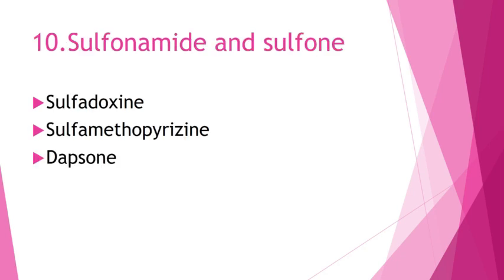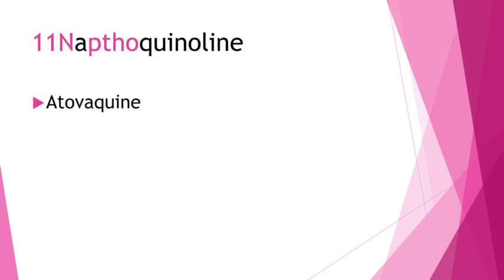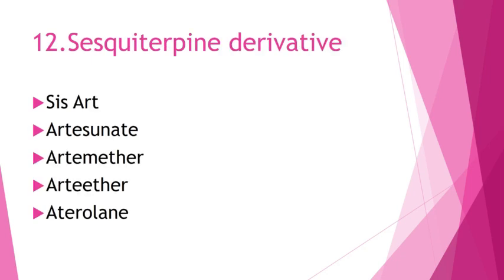Tenth is sulfonamide and sulfone — in this class we have sulfadoxine, sulfamethoxypyridazine, and dapsone, three drugs. Eleventh is naphthoridine, with the drug atovaquone. Twelfth is sesquiterpene derivatives — mnemonic CISART: artesunate, artemether, and arteether.